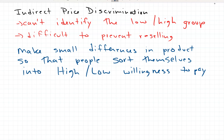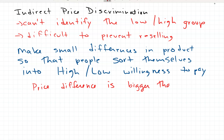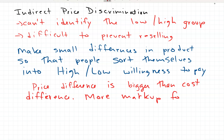You have to be very careful with these kinds of differences. The key idea is that the price difference must be bigger than the cost difference. So the markup is bigger on the high-value product — there is more markup for the high group, meaning they pay a bigger markup over the marginal cost of production.